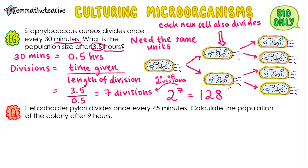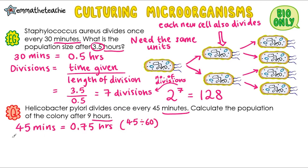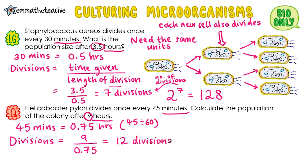Helicobacter pylori divides once every 45 minutes. Calculate the population of the colony after 9 hours. Our units aren't the same, so we're going to turn the minutes into hours — that gives us 0.75 hours when we divide 45 by 60. Then we're going to work out the number of divisions by dividing the time given, which is 9 hours, by the length of the division, which is 0.75 hours. When we pop that into our calculator, it gives us 12 divisions. So we take our magic 2 and put it to the power of 12, and from our calculator we get 4096.